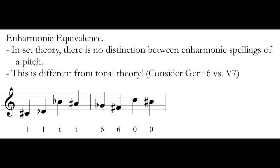Note that this is a little bit different from what we're used to in traditional tonal theory. Consider, for instance, the German augmented 6th chord and the dominant 7th chord. Both of these chords sound the exact same, but because they are spelled differently, we treat them different, we label them different, and they function differently. Well, we don't have to worry about that in set theory. All our enharmonic pitches are treated the same.